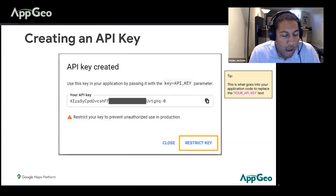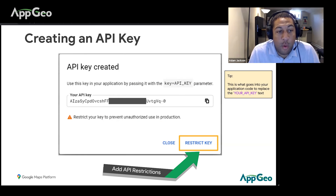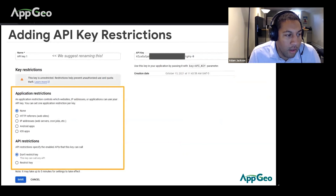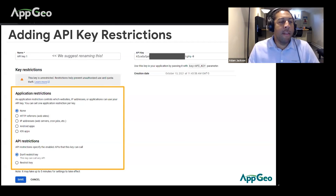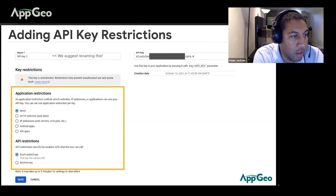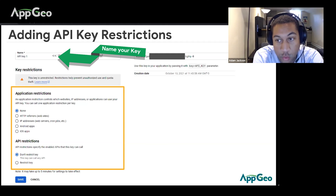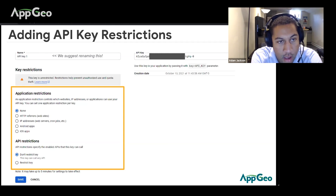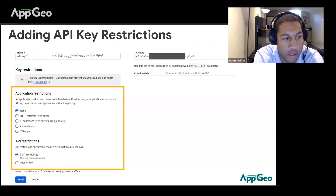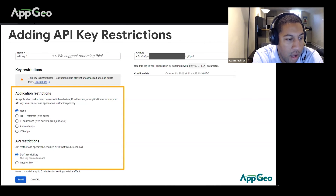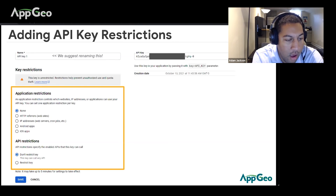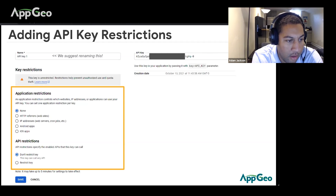Once you select API Key, your key is created — very easy. Google will automatically alert you to restrict your key, which is a way to make sure your key is secure in case it ever gets in the wrong hands. You can rename the key to something descriptive, like the team or application using it, especially if you have multiple keys. As for restrictions, you can restrict your key to only work on a certain website, IP address, Android or iOS app, or a specific API — an added layer of security to prevent unauthorized charges.